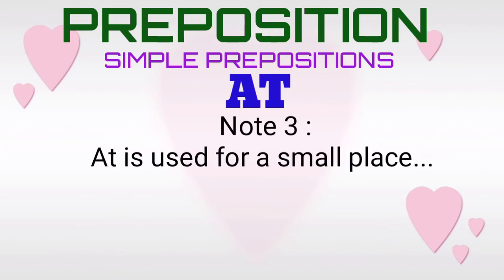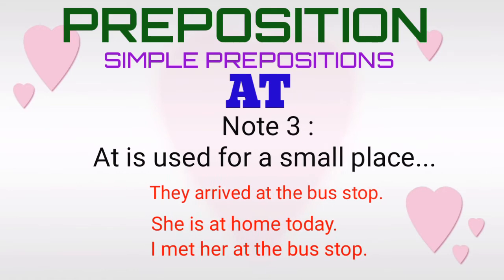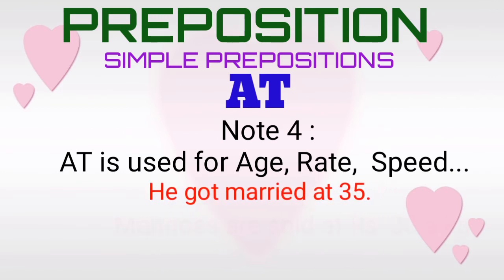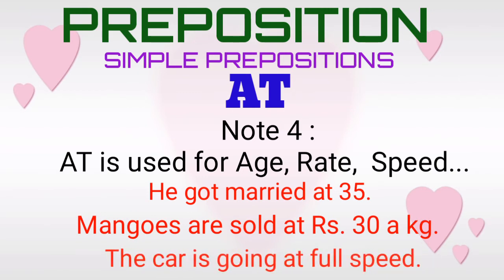Note three. The simple preposition 'at' is used for a small place. For example: 'They arrived at the bus stop.' 'She is at home today.' 'I met her at the bus stop.' Note four. The simple preposition 'at' is used for age, rate, and speed. For example: 'He got married at 35.' 'Mangoes are sold at rupees 30 a kilogram.' 'The car is going at full speed.'